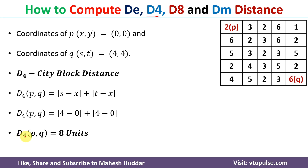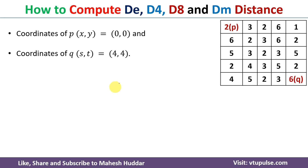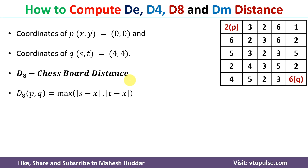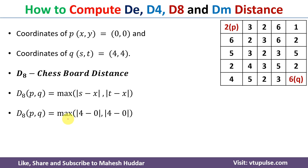Next, we calculate D8, also known as the chessboard distance. The D8 distance between p and q is calculated as the maximum of |s−x| and |t−y|. Putting in the values: max(|4−0|, |4−0|) = max(4, 4) = 4. So the D8 chessboard distance between p and q is 4 units.